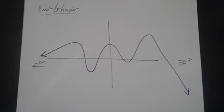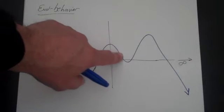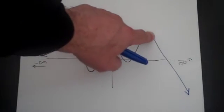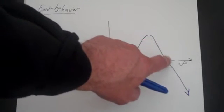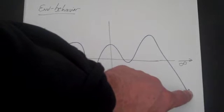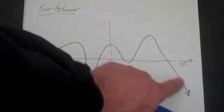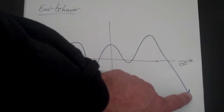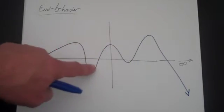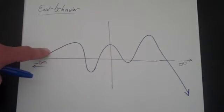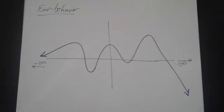If we talk about the end behavior of this function, what we mean is what happens when x gets very, very large or very, very small — specifically as x goes to infinity or toward negative infinity. We simply follow the function as x gets larger and larger. If the function tends toward doing a certain thing, that's the end behavior. When x gets very large, y goes to negative infinity. When x goes toward negative infinity, it looks like y gets closer and closer to zero. That's what we mean by end behavior.